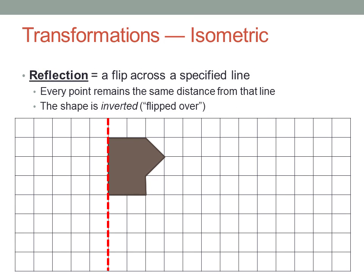A reflection is a flip across a specified line. Every point in the shape will remain the same distance from that line, but on the other side. When the line is vertical or horizontal, it's usually fairly easy to do. The image is inverted, but we still say that it's congruent to the object. It's flipped over, but the angles and lengths are all still the same and are still in the same relationships with each other.